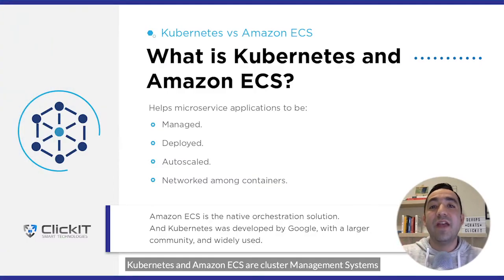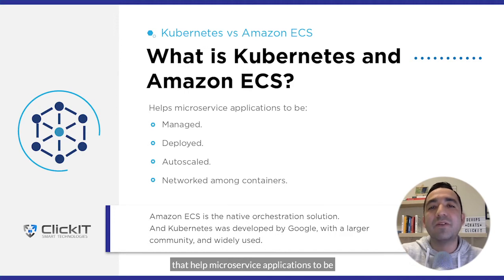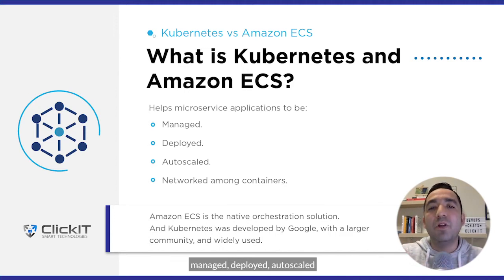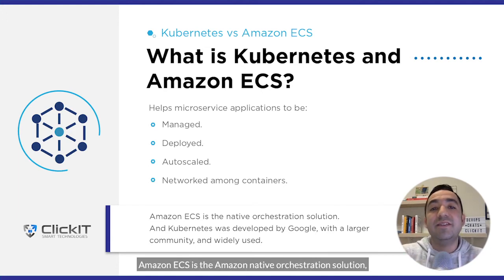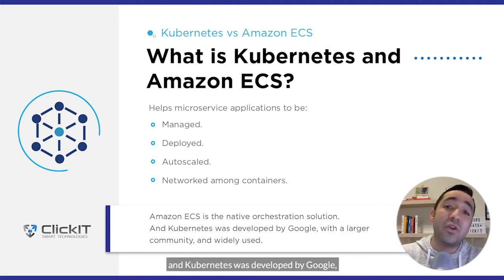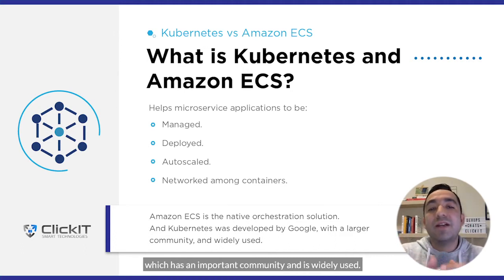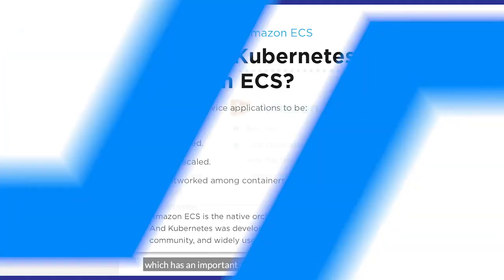In short, Kubernetes and Amazon ECS are cluster management systems that help microservice applications to be managed, deployed, auto-scaled, and networked among containers. Amazon ECS is the Amazon native orchestration solution, and Kubernetes was developed by Google, which has an important community and is widely used.